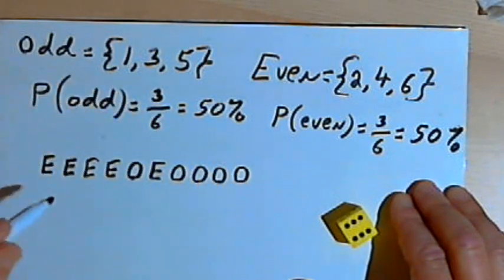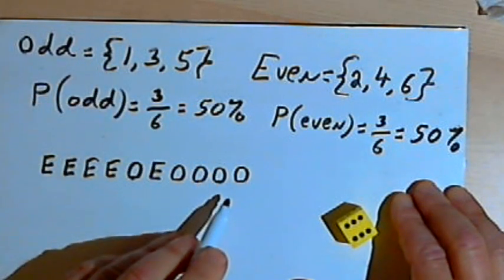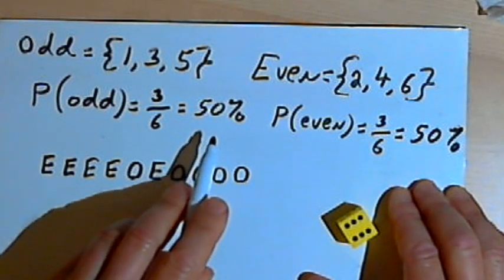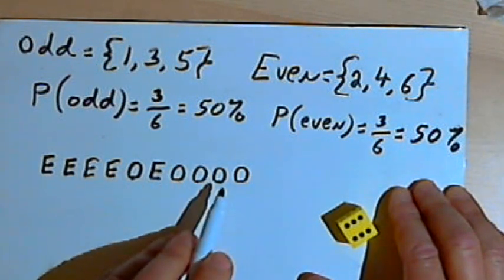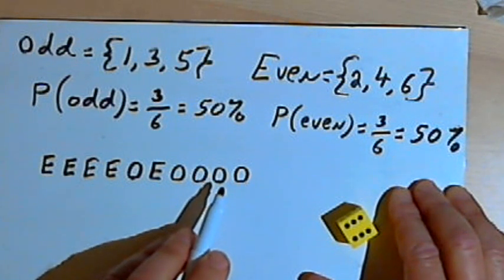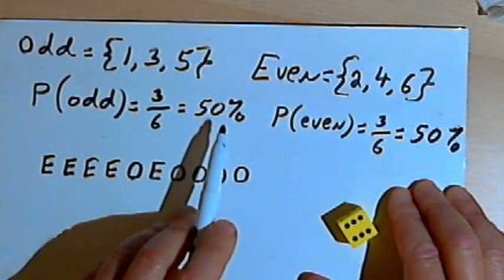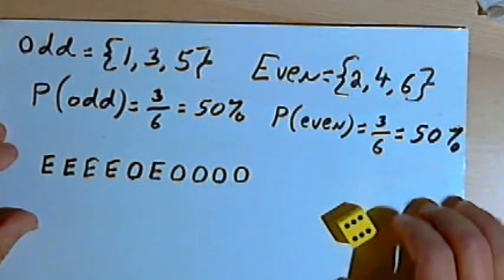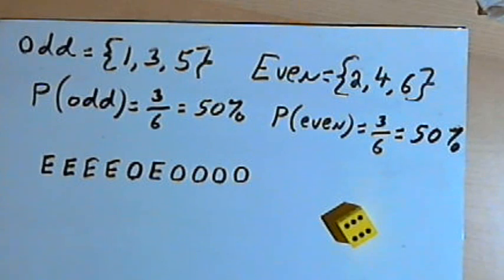All this means is that if I do this experiment enough times, I'm going to get close to 50 percent even numbers and close to 50 percent odd numbers. And the more times I do it, the closer I'm going to come to those theoretical probabilities. Okay? So that's the way the law of large numbers works. Take care. I'll see you next time.